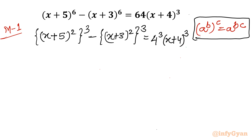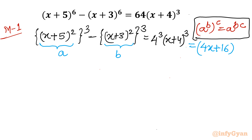Now I will use substitution. I will call (x+5)² as 'a' and (x+3)² as 'b'. The right hand side can be written as (4x+16)³, and I will call that bracket 'c'. So 4³ times (x+4)³ — merging both bases gives 4 times (x+4), which is (4x+16).